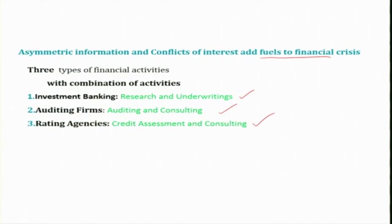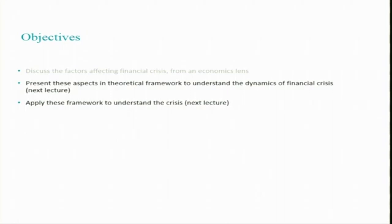In fact, in the 2007-8 crisis this conflict of interest also played a crucial role in aggravating the problem. Now, after discussing the factors affecting financial crisis, let us see the sequence of events in a financial crisis. Here we are going to develop a theoretical framework to understand the dynamics of financial crisis — what are the stages, including the factors we discussed, and how financial crisis starts. In the next session we will apply this framework to understand the 1929-era and 2007-8 financial crises.